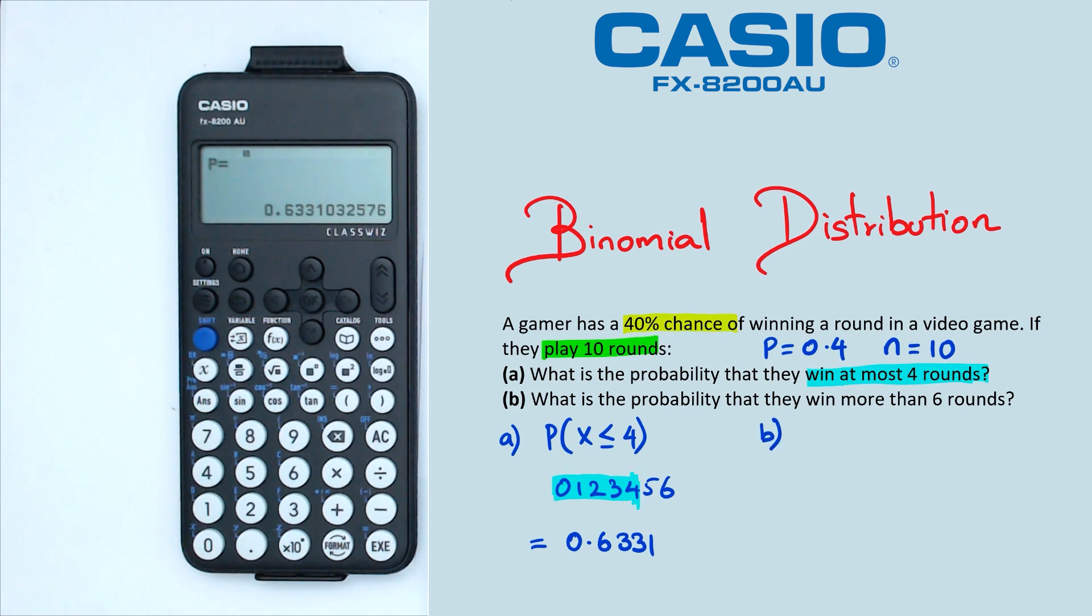Now looking at the second part of this question, we are looking for a probability that they win more than 6 rounds. Now to win more than 6 rounds, we're going to write it like this: probability of x greater than 6. And if we were to look at these numbers, I'm only going to put a few numbers here. So we've got 4, 5, 6, 7 and 8 and up to 10.